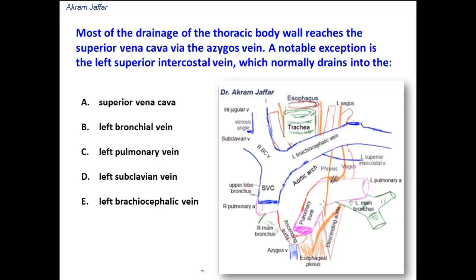Most of the other posterior intercostal spaces, whether on the right or the left side, drain into the azygous system of veins — the azygous, hemi-azygous, and accessory hemi-azygous. This azygous system of veins ultimately opens into the superior vena cava, the posterior part of the superior vena cava, after the azygous vein arches over the root of the right lung.